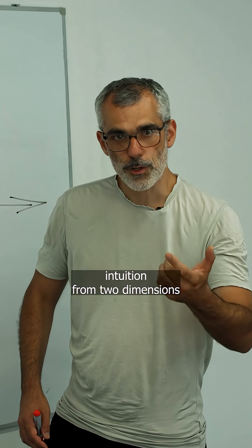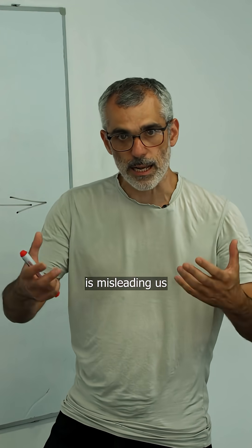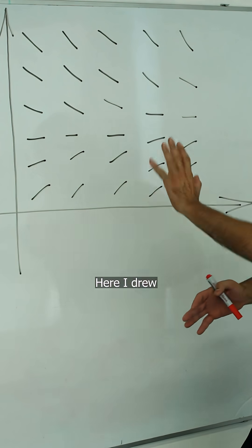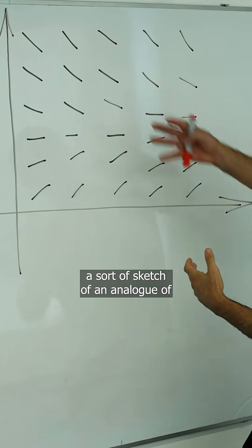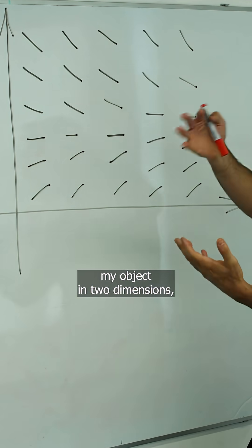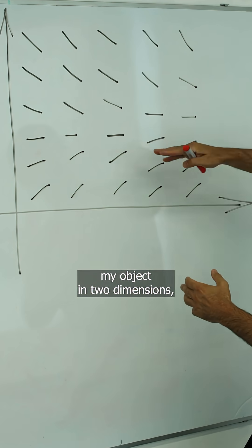Sometimes our intuition from two dimensions is misleading when we think about three-dimensional objects. Here I drew a sketch of an analogue of my object in two dimensions, where I have lines in the plane as opposed to planes in three-space.